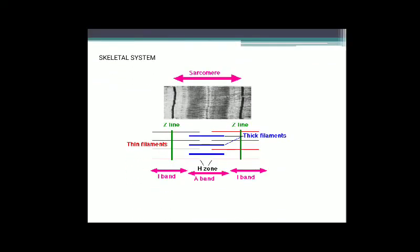The light band contains actin and is known as I-band, that is isotropic band. The dark band contains myosin and is known as A-band, that is anisotropic band. Both bands are present parallel to each other in a longitudinal fashion. In the center of each I-band is an elastic fiber known as Z-line.